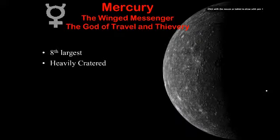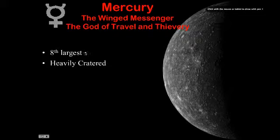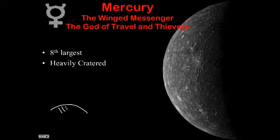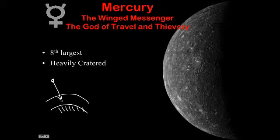Let's take a look at Mercury. Mercury is the smallest of the terrestrial planets — and in terms of all the planets, not the dwarf planets, it's the smallest, or the eighth largest. It's also heavily cratered. Here's Earth with its atmosphere. When a rock crashes toward Earth and hits the atmosphere, it will burn up because of the friction between the rock and our atmosphere. So it will burn up and pretty much be gone by the time it even hits Earth. Any little piece that does hit Earth doesn't leave a very big dent.